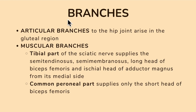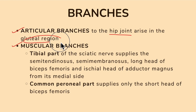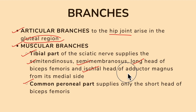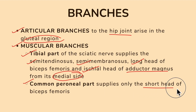The common peroneal part supplies only the short head of the biceps femoris muscle. To summarize the branches: articular branch to the hip joint; the tibial part of muscular branches supplies semimembranosus, semitendinosus, long head of biceps femoris, and the ischial head of adductor magnus; the common peroneal part supplies only the short head of biceps femoris.